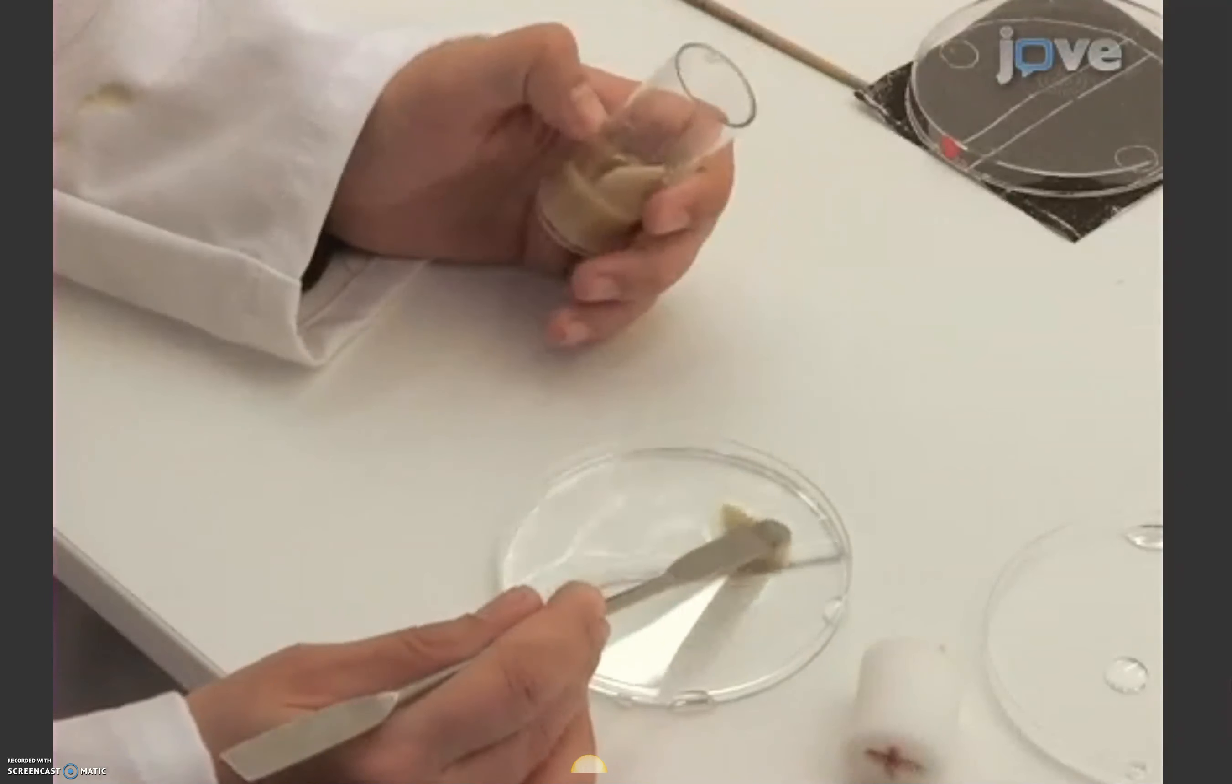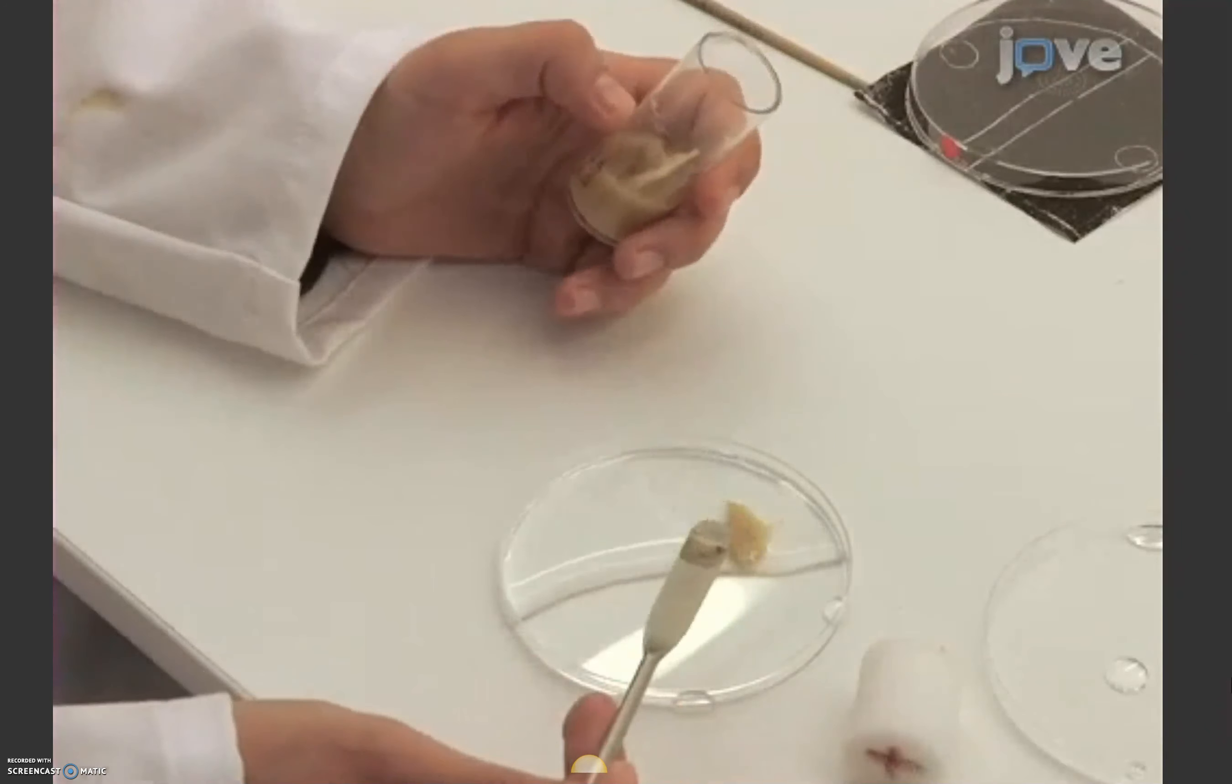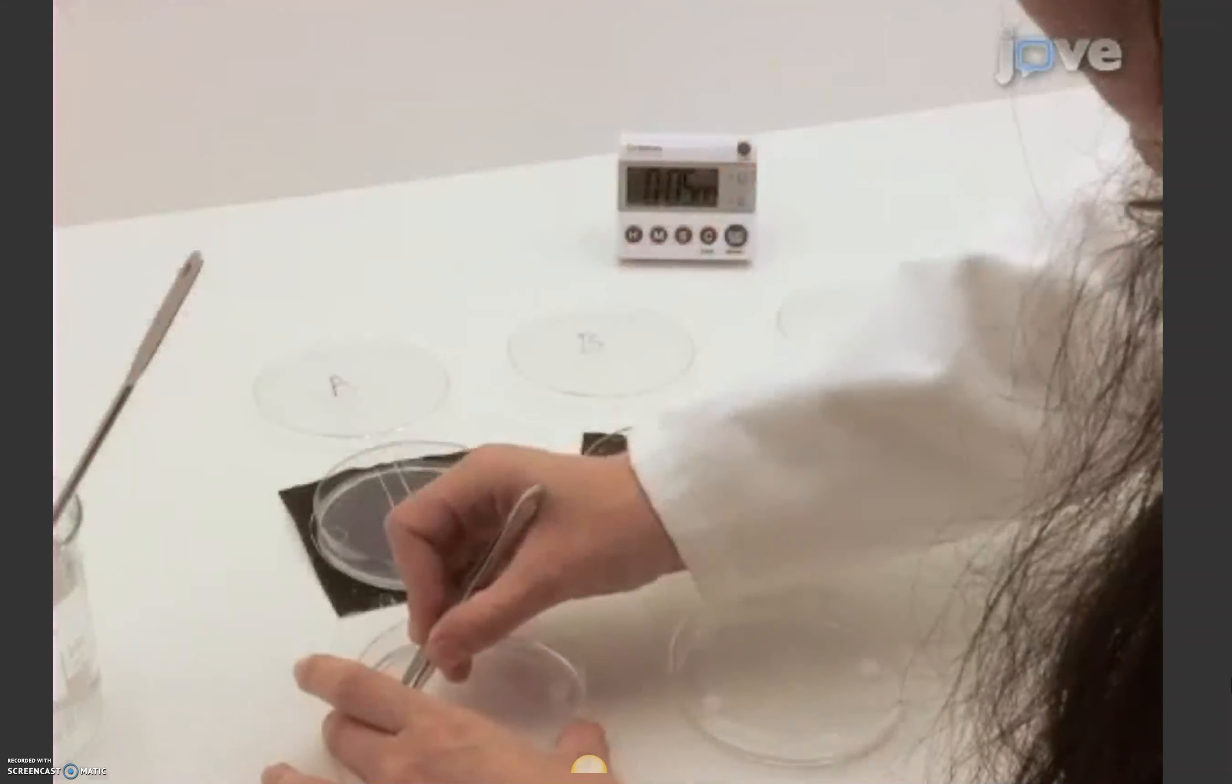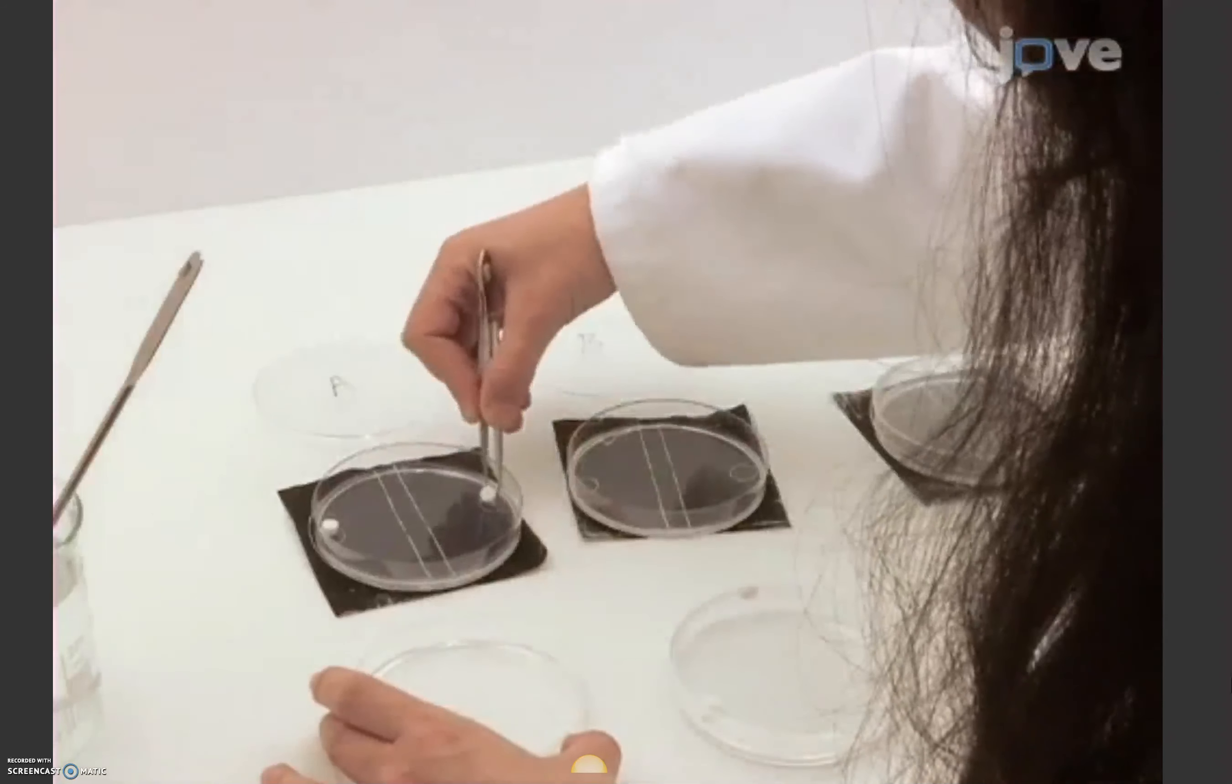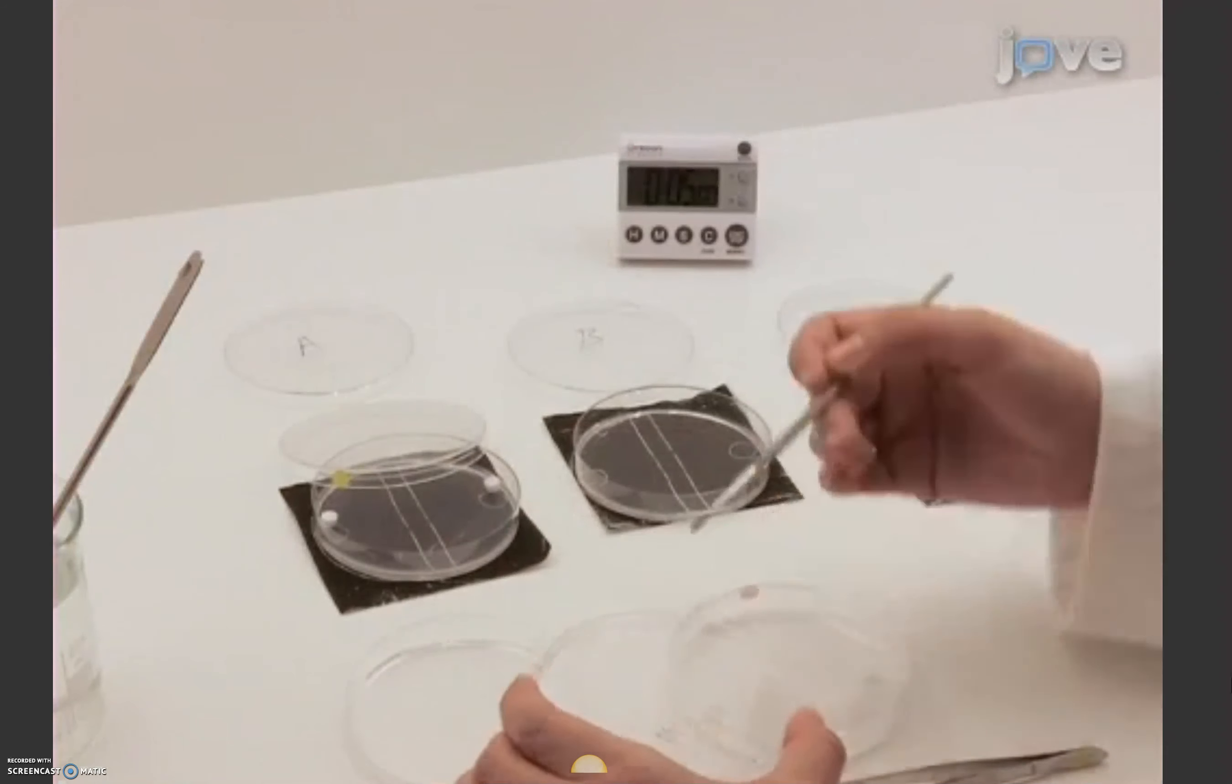Finally, to complete the experiment, select 30 new third instar feeding larvae and repeat the training and testing with the opposite combination of reward and stimuli. Continue using the same odor containers.